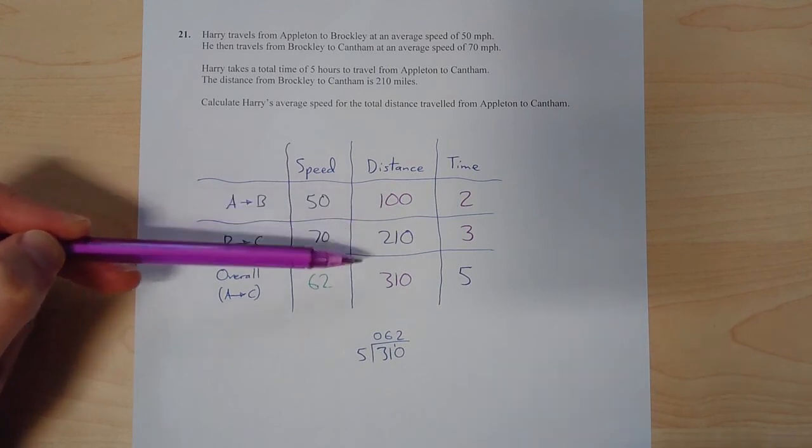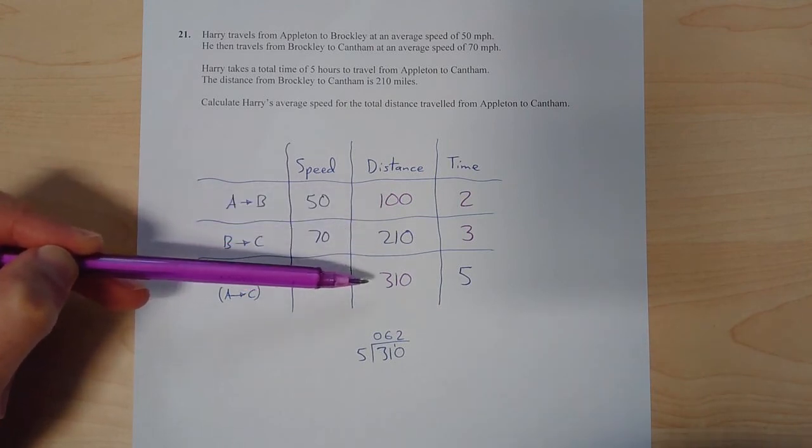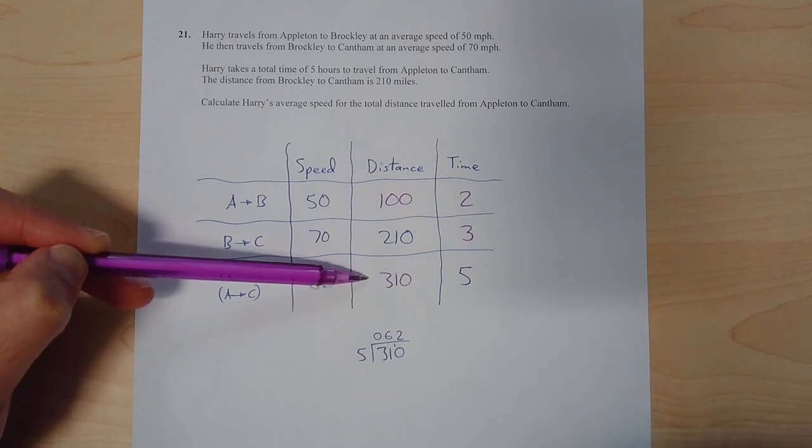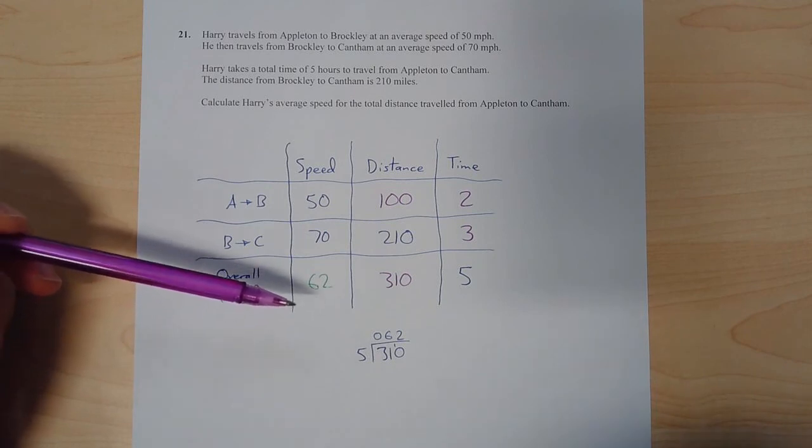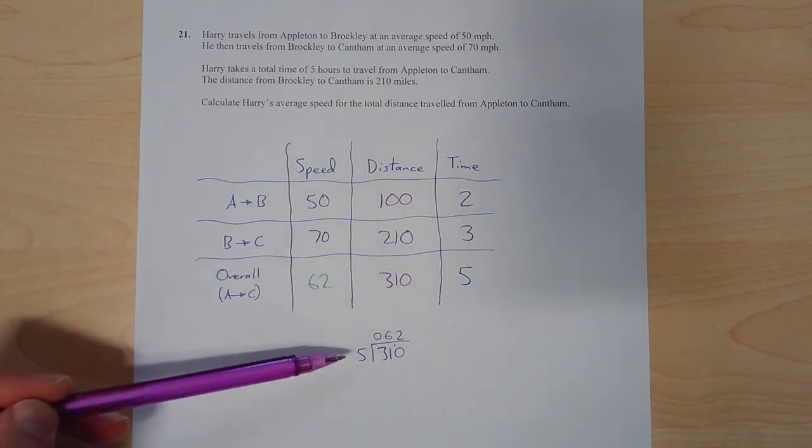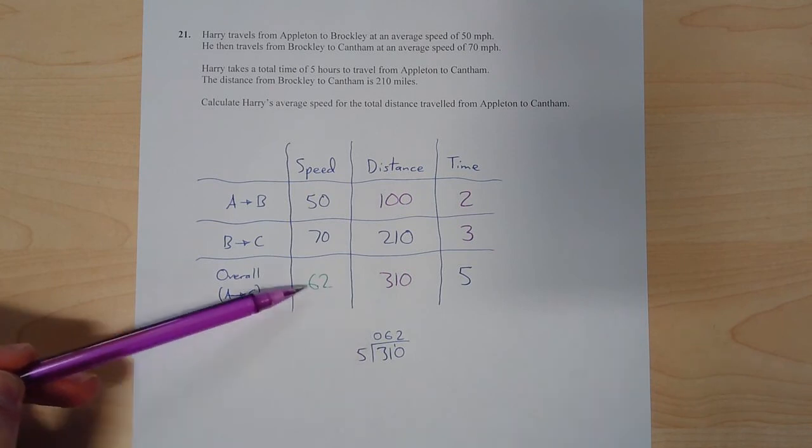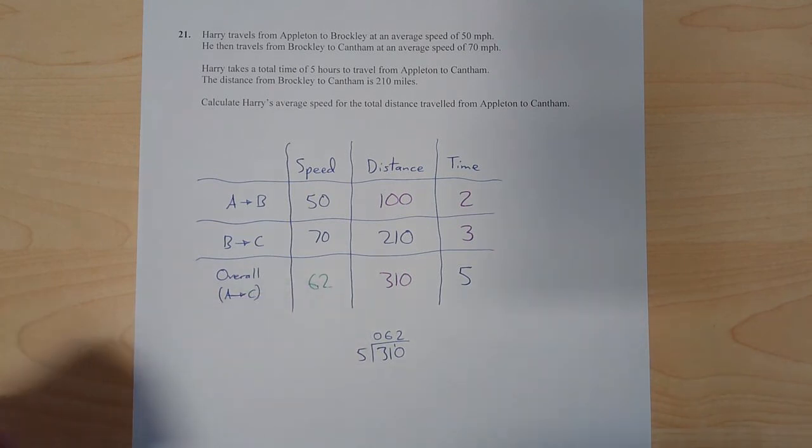Adding these two together gives me the total overall distance of 310 miles. So now I've got 310 miles. In five hours, I want to work out what if we're traveling one hour, because that would be the speed. So I've done 310 divided by five, and I get 62. So this number here in green is my final answer.